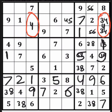Now 3-4 pair is here and 1-4 will go in either this or this. Now if I put 3 here, this will lead to multiple solutions. Let's see how.